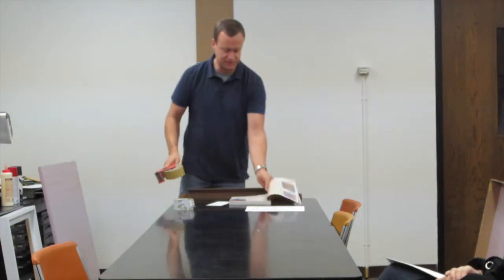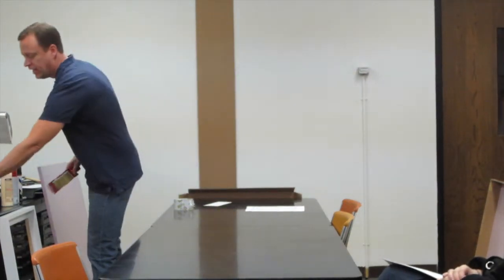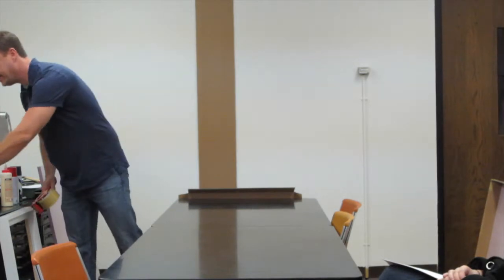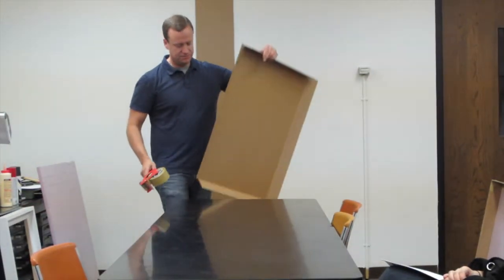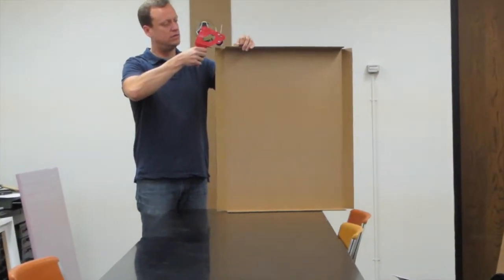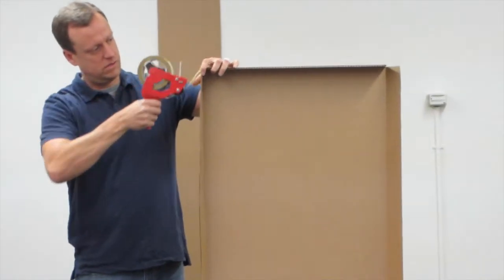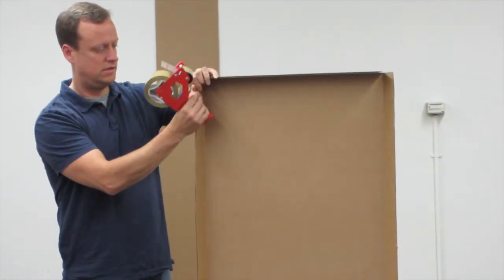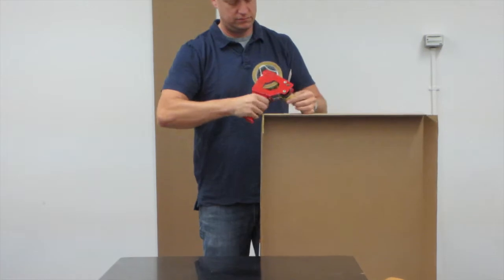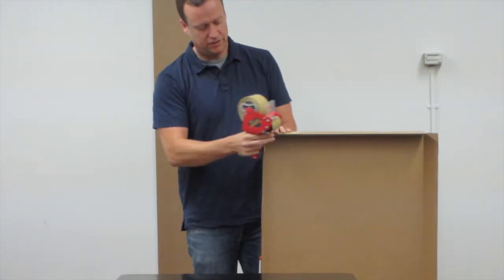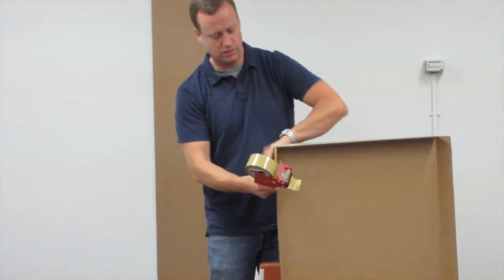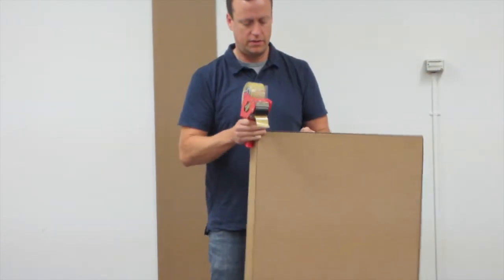So anyway, when I go to tape a box, it's its own sort of affair. Because this thing is going to be traveling across the country potentially. And you want to make sure it doesn't just disintegrate on you. So I always start by taping my corners. And I'll normally give it a couple of coats, or a couple of layers.